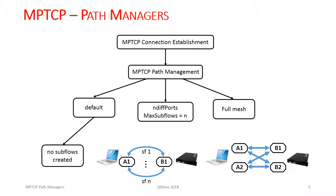Path management is a core function of MPTCP which, upon initial setup of the MPTCP connection, creates subflows between the two end hosts. The Linux kernel implementation provides four path managers that users can select at compile time: default, full mesh, NDIF ports, and binder. Default mode means no new subflows are created and the behavior is the same as simple TCP. In full mesh mode, multi-homed hosts advertise addresses to peers and create a complete mesh.